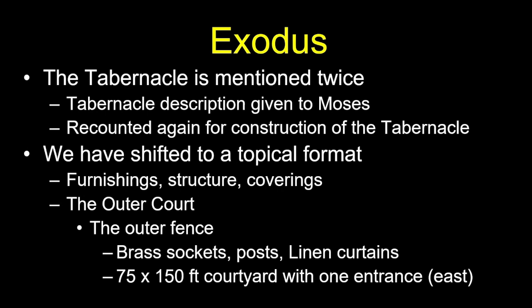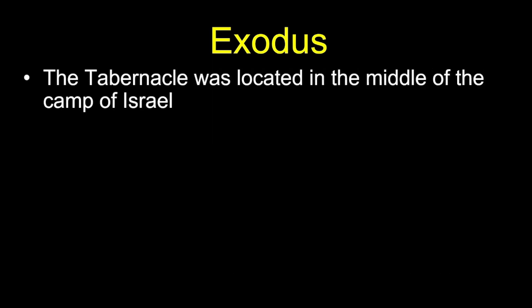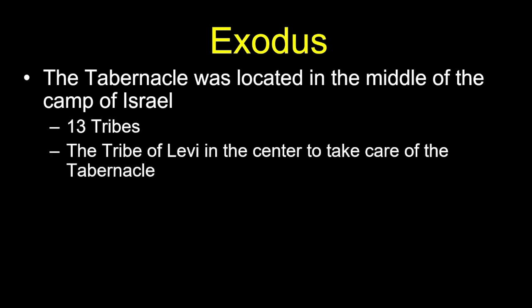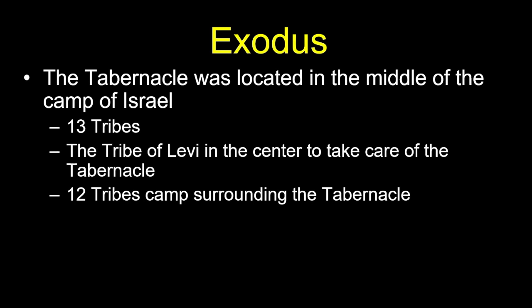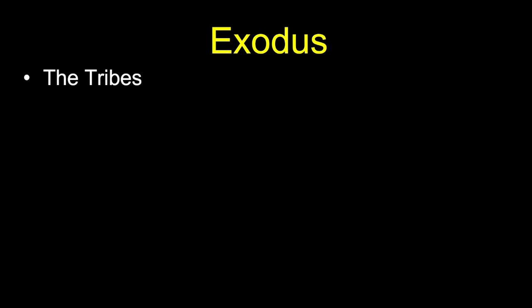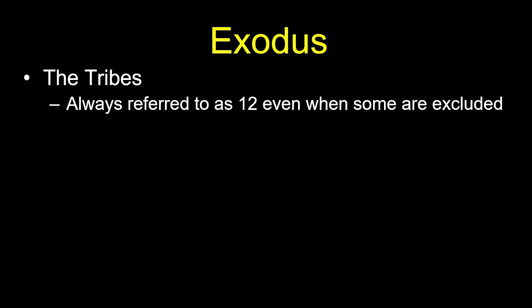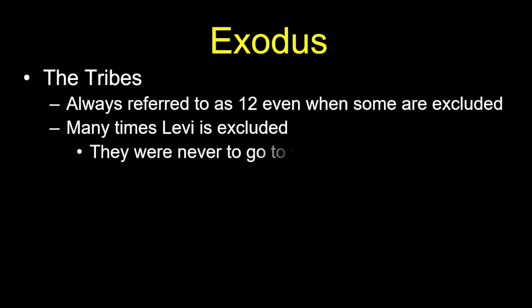The tabernacle was located in the middle of the camp of Israel, which consisted of really 13 tribes. The tribe of Levi was in the center taking care of the tabernacle, so 12 tribes surrounded it. This can cause confusion when reading scripture — there are always 12 tribes whether you count Levi or not. If you exclude Levi, there are still 12 because the tribe of Joseph splits into Ephraim and Manasseh.